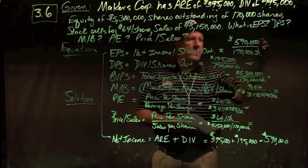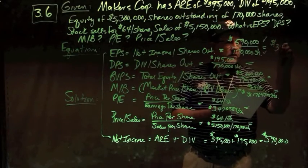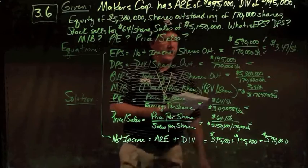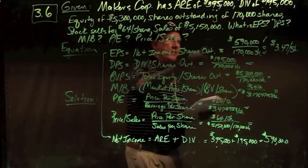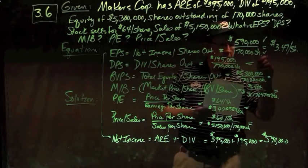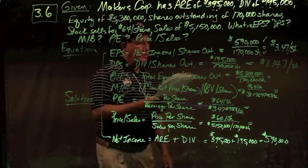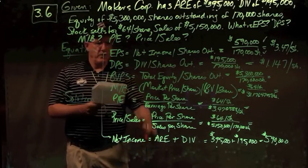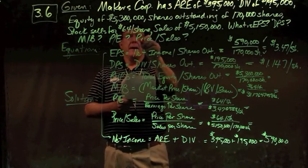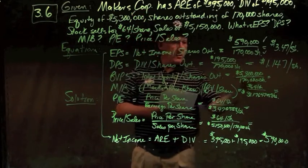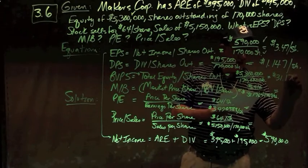Dividends per share are simply $195,000 dividends divided by 170,000 shares, giving approximately $1.147 per share. Book value per share — book value is the same as total equity — so equity of $5.3 million divided by 170,000 shares gives a book value per share of $31.18 per share.